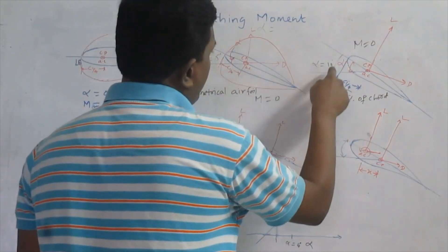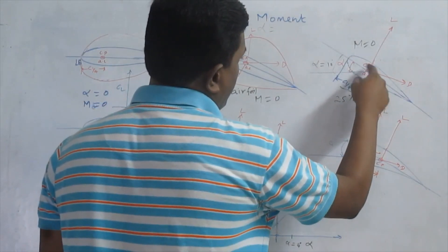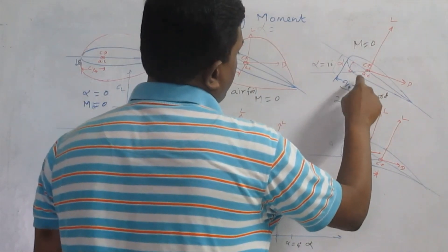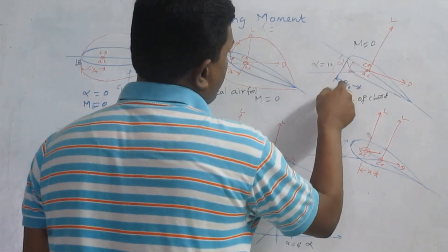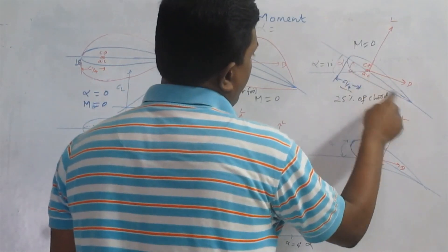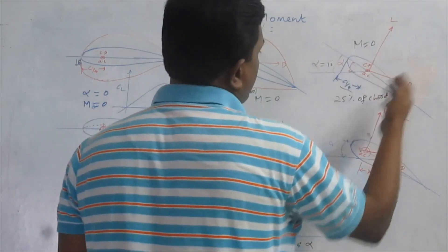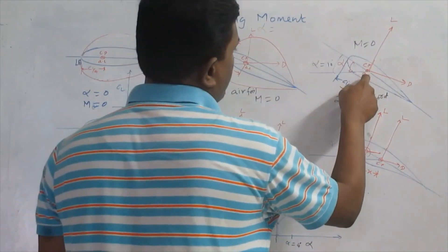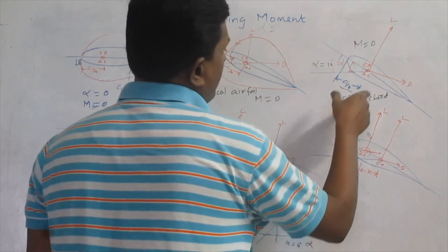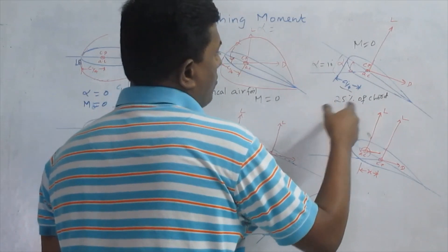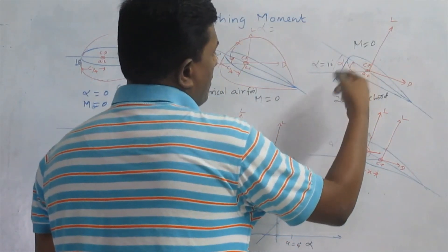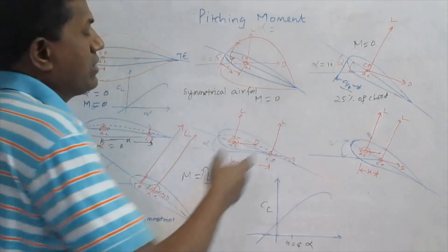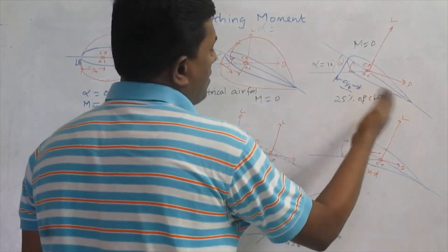As the angle of attack increases further, the center of pressure is still at the same point. The quantity of lift increases, but the center of pressure still lies at the quarter chord point. This is because the distributed forces increase in the same proportion, so the center of pressure does not move away from the quarter chord point. For thin aerofoils and low-speed aerofoils, the aerodynamic center and center of pressure are fixed at 25% of the chord — the quarter chord point. This is verified from both experimental and theoretical calculations.